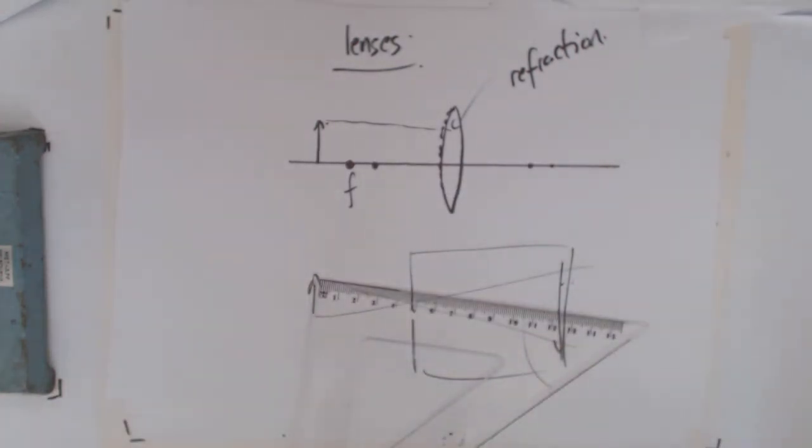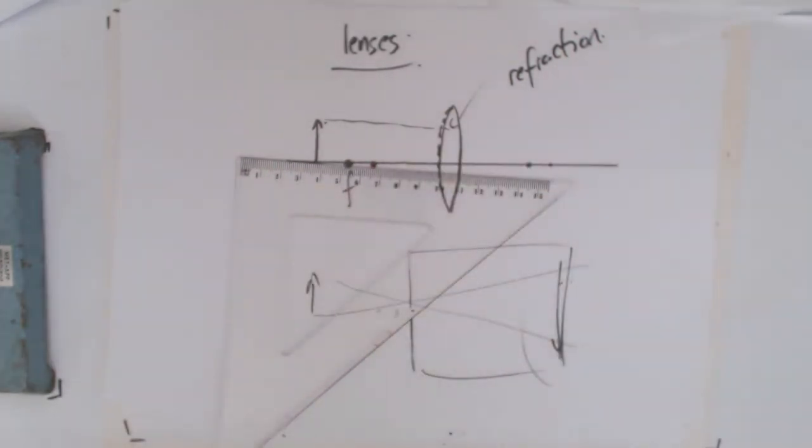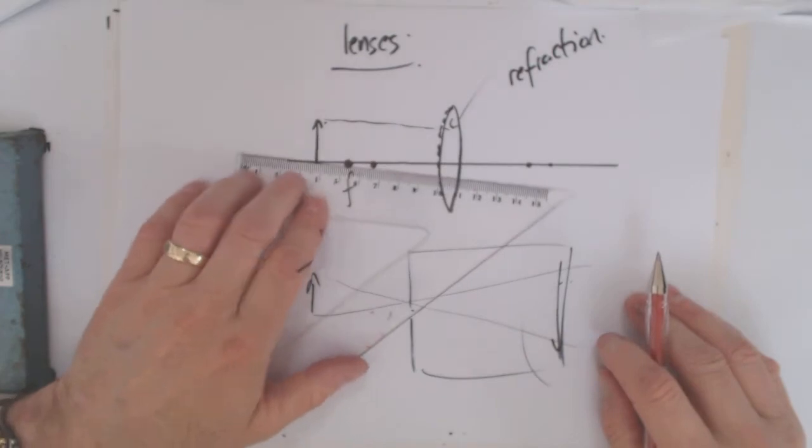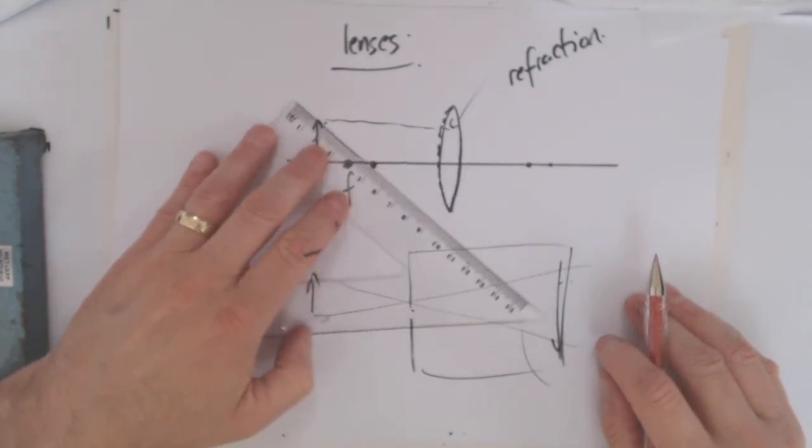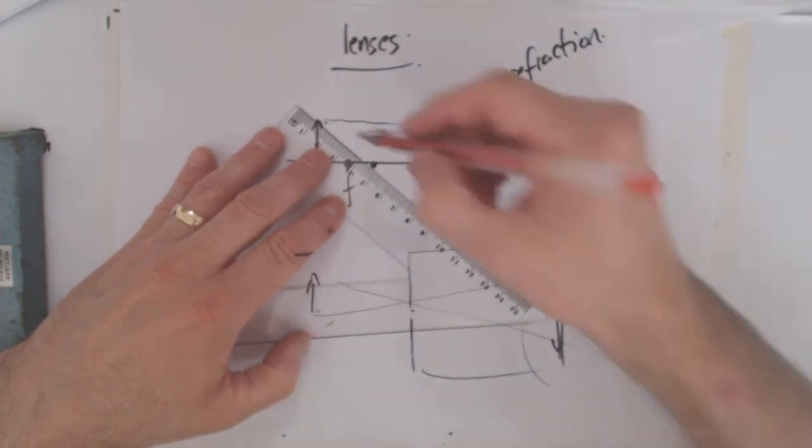So as we make our focal length smaller, it's going to cause more convergence. Let's see what that does to the actual image size. With the first one we have an image size, let's just go through it.